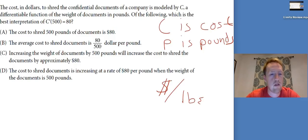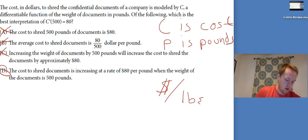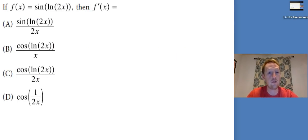We're looking for something that says dollars per pound and instantaneous rate of change. So the cost to shred 500 pounds of documents is $80. No, the average cost. No. Increasing the weight of documents by 500 pounds will increase the cost to shred the documents by approximately $80. No, that doesn't say anything about instantaneous rate of change. The cost to shred documents is increasing at a rate of $80 per pound when the weight of the documents is 500 pounds. Perfect. That's exactly what we're looking for. We've got increasing at a rate dollars per pound when it's 500. That's perfect.